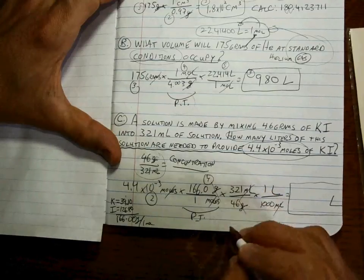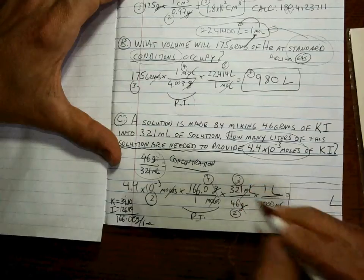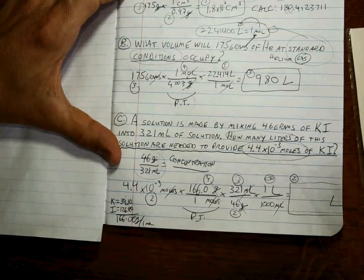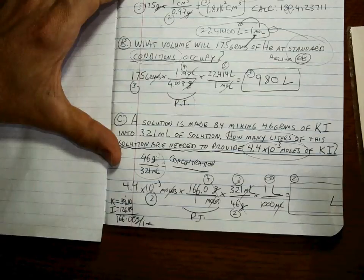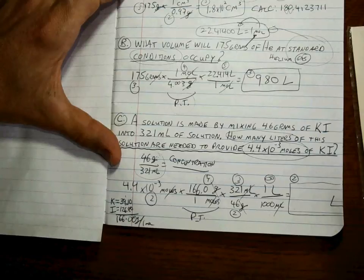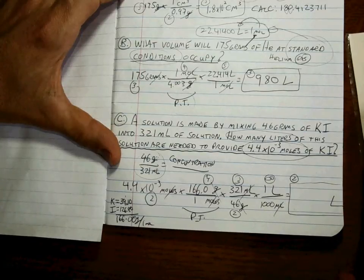This is two sig figs, this is four, this is two and three, and this is infinite, so the answer should have two sig figs. Let's see how many that is. 4.4 times 10 to the minus 3 times 166 times 321 divided by 46 divided by 1000. I get 0.0051 liters.